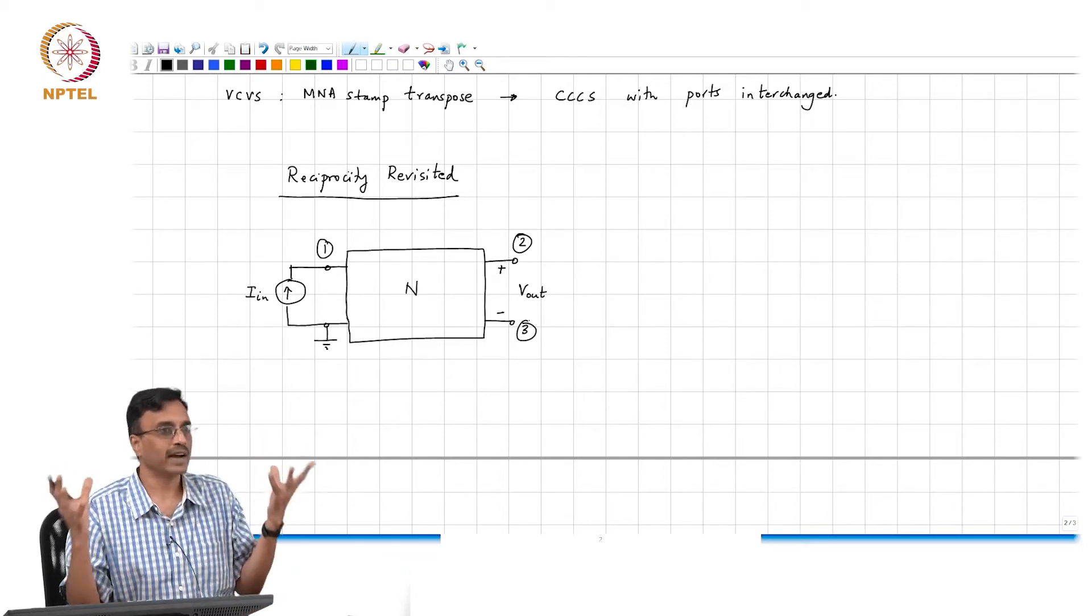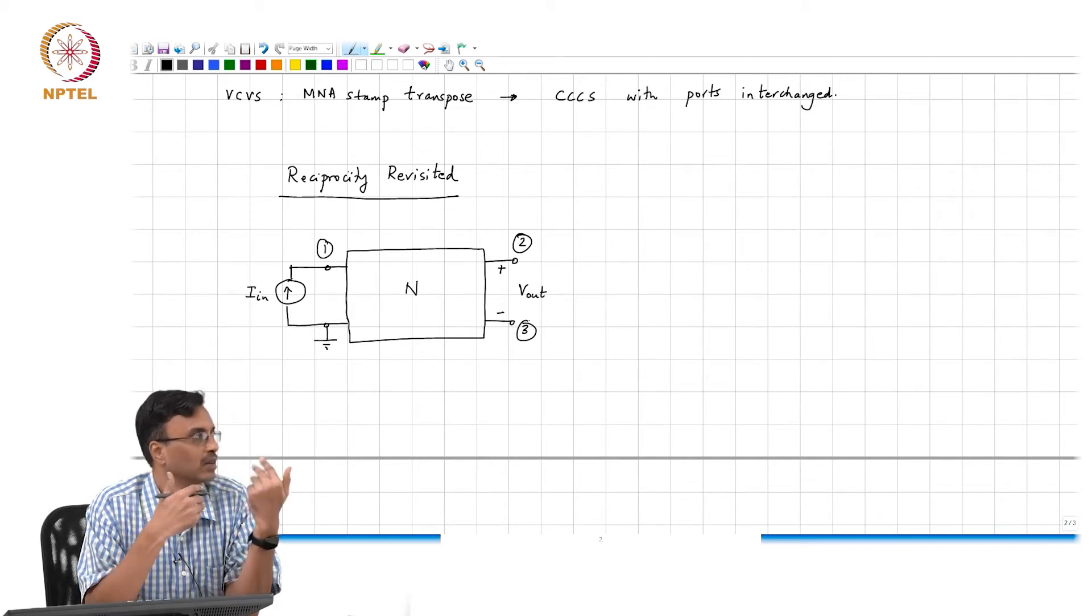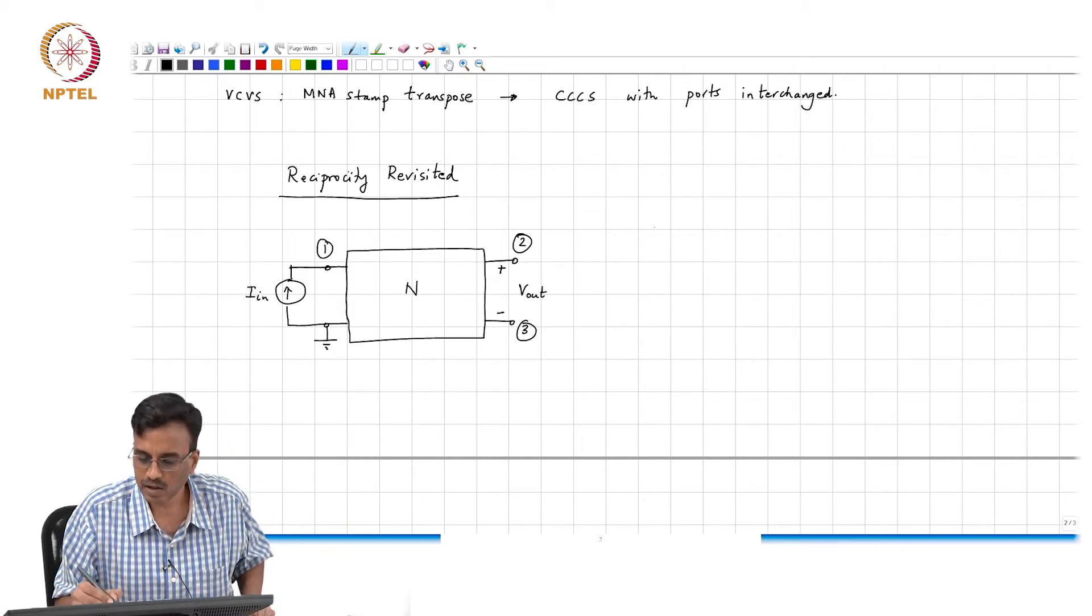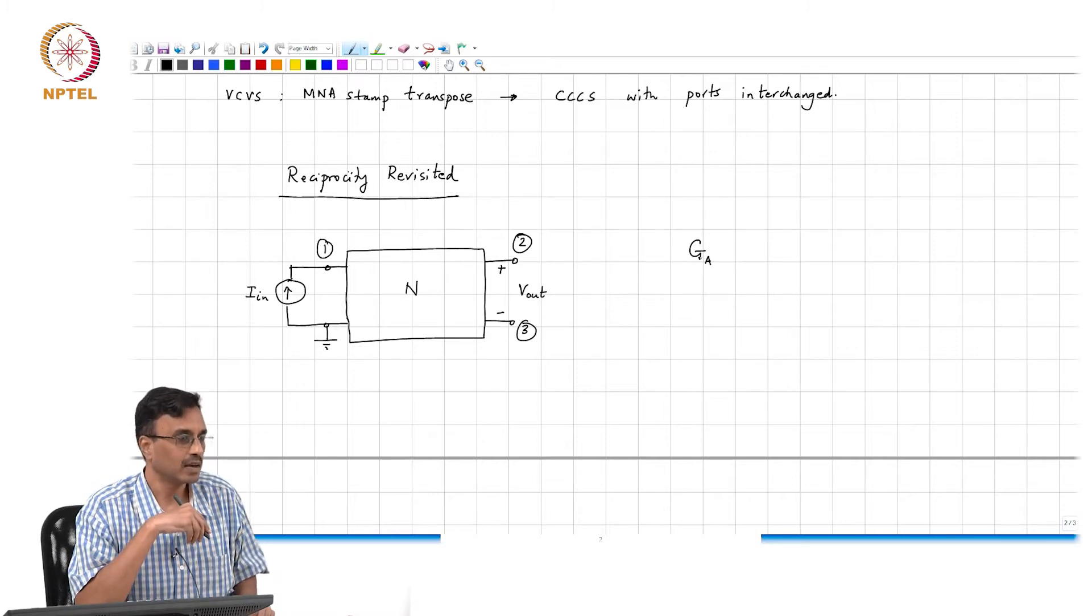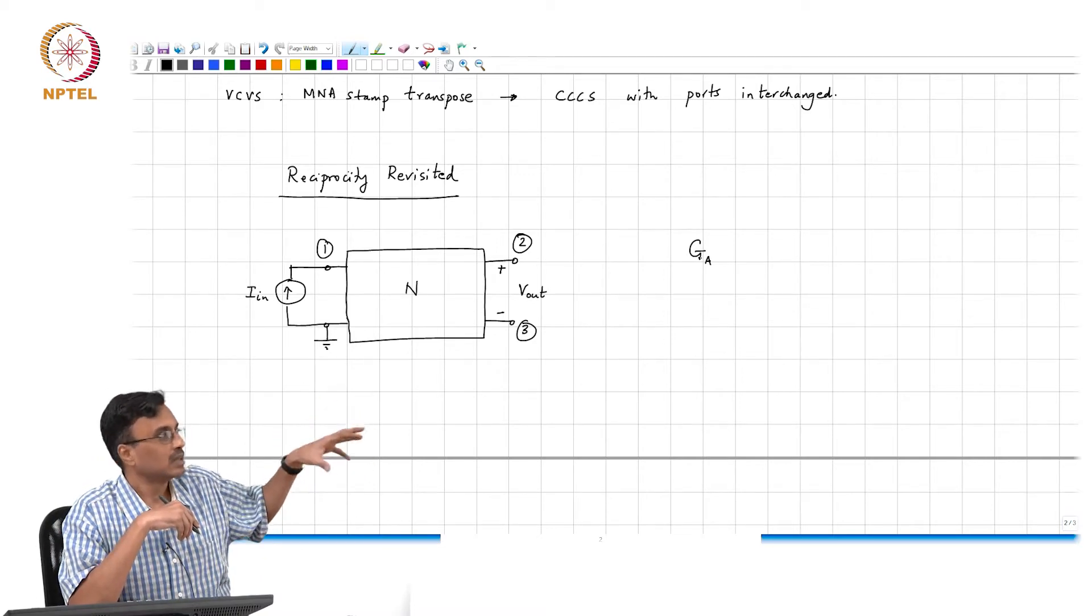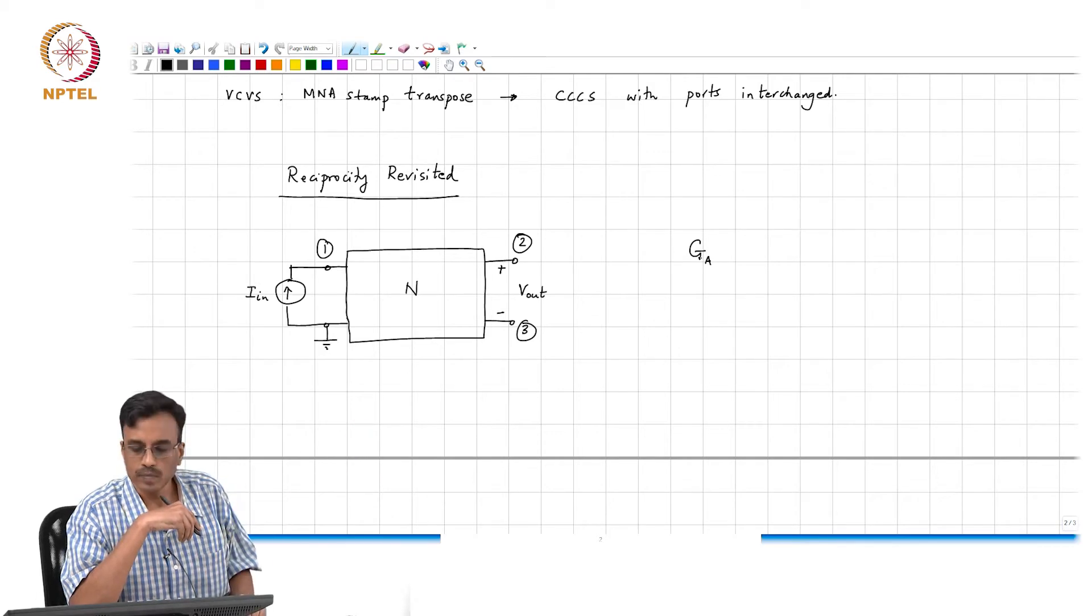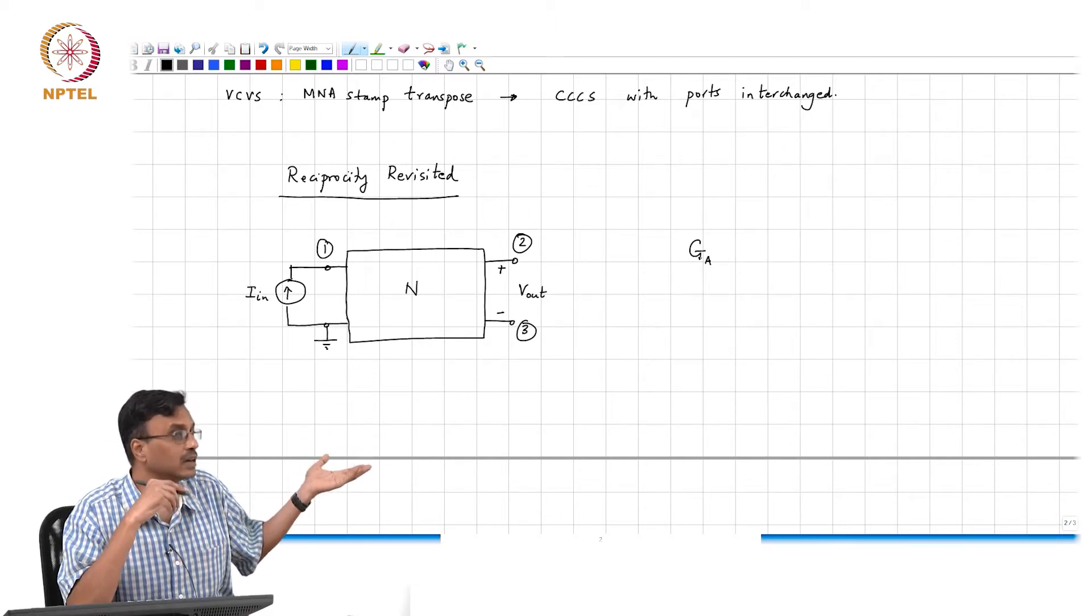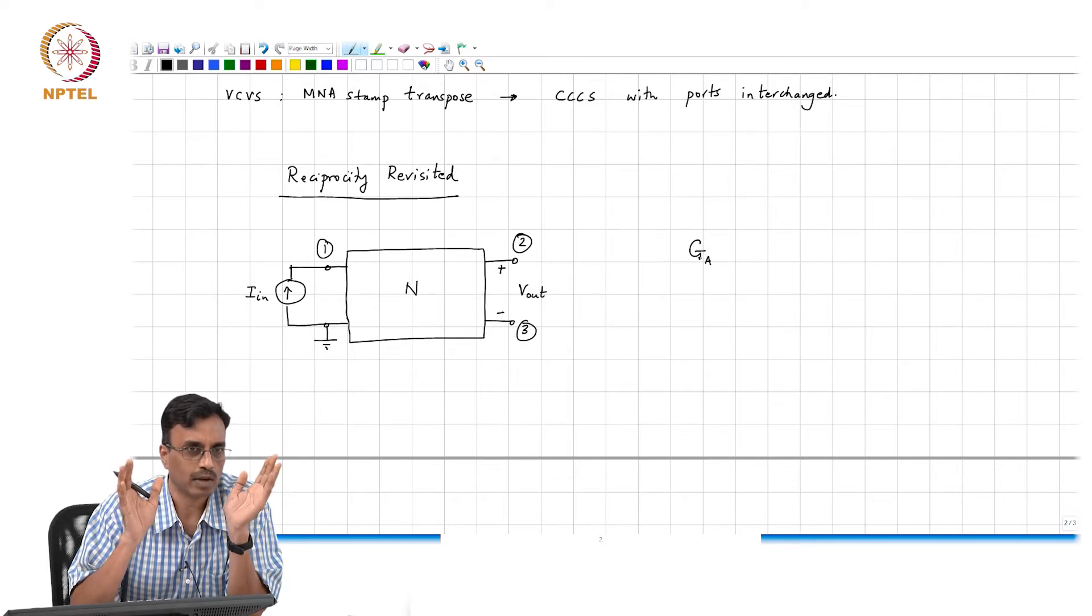How will I go about solving the network? Let's say I know the internals of the network, what will I do? Basically just go and write the MNA equations for the entire network and you will basically find that you will get an equation of the form: some augmented conductance matrix, where the augmented conductance matrix will contain entries corresponding to the conductances and the controlled sources and all that stuff which are potentially inside this box.